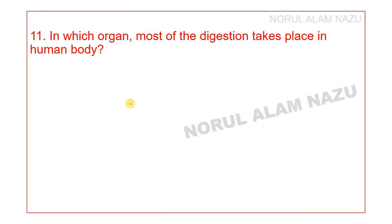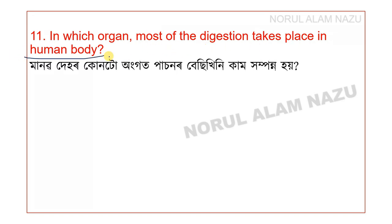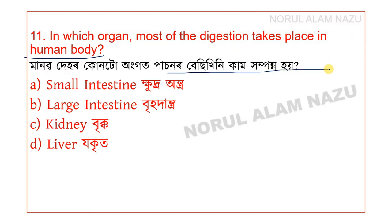Question number 11: In which organ does most of the digestion take place in the human body? The options are Small Intestine, Large Intestine, Kidney, and Liver. The answer is Small Intestine.